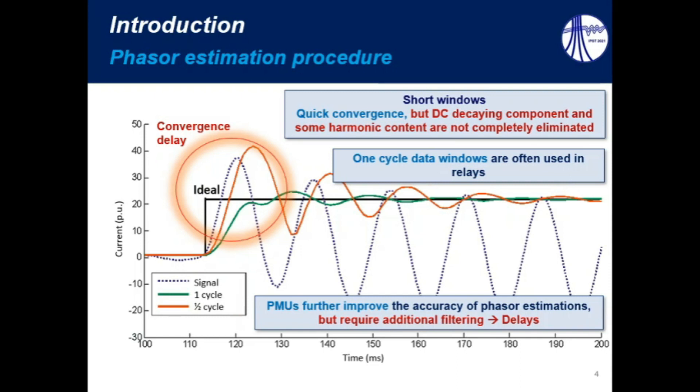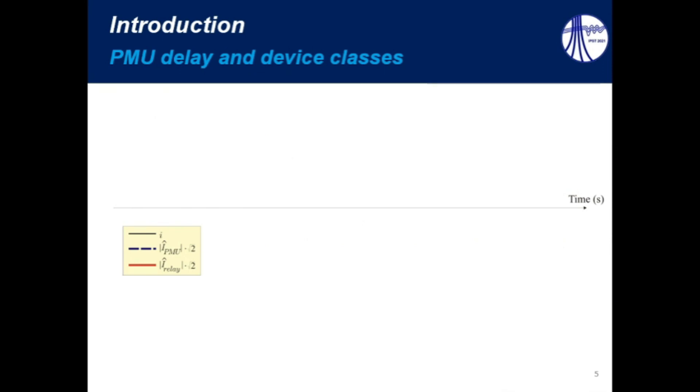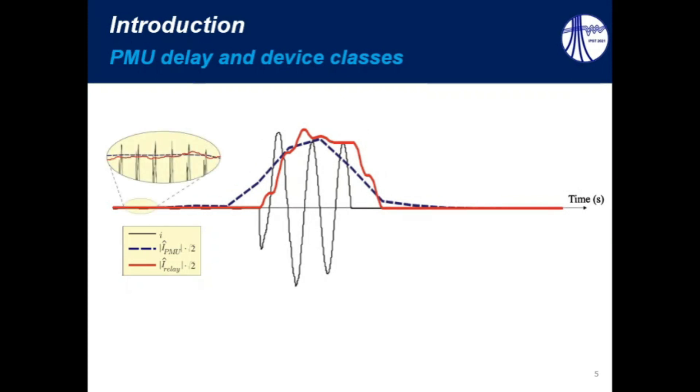However, to do so, these PMUs require additional filtering, which result in additional delays. In order to analyze the problems that can arise due to these additional delays, let us consider a fault current record, in which we firstly estimate the phasor using a one-cycle data algorithm, and then a PMU. As we can see here, if we consider a zoomed area during the steady state,